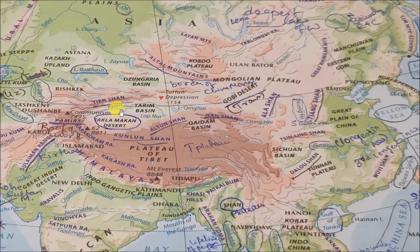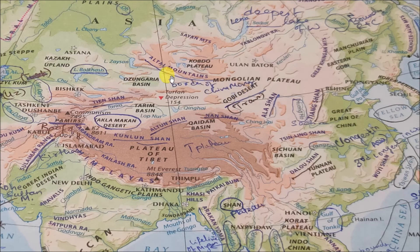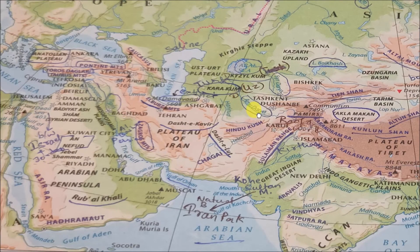Another very important mountain is the Altai Mountains. The Altai Mountains are important because they act as a natural border between China and Mongolia. With this, we have covered all the mountains.